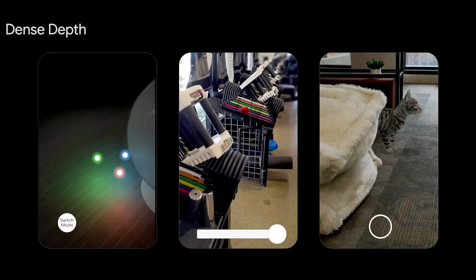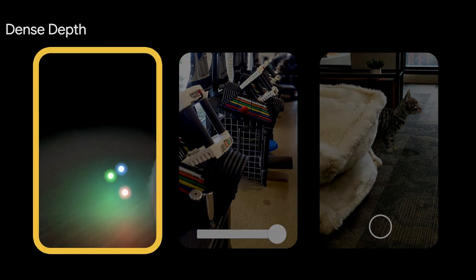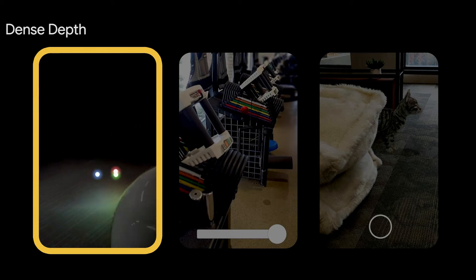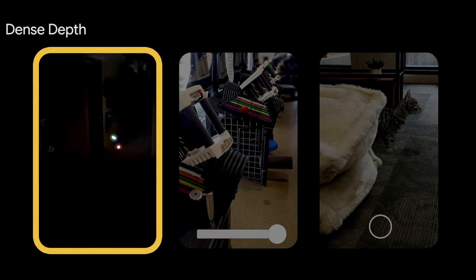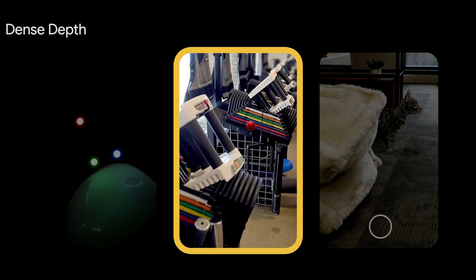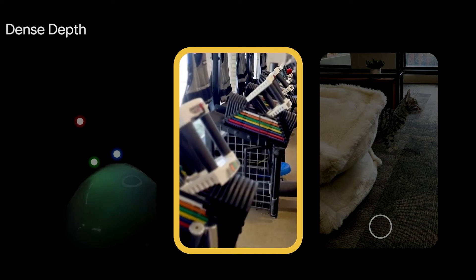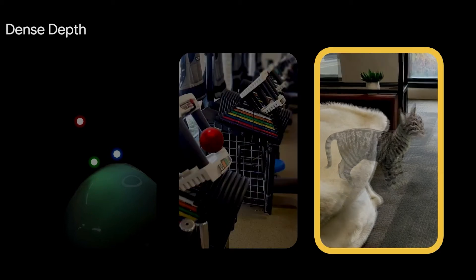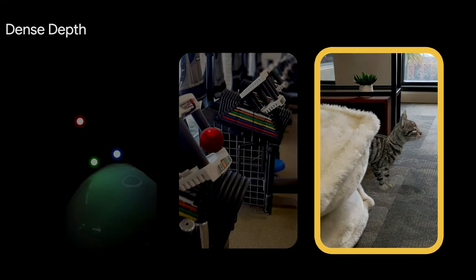Dense Depth ships a depth texture to the GPU and renders screen space effects with fragment shaders. It is useful for many computational photography tasks, such as relighting the world with virtual light sources, simulating a DSLR camera with aperture effects like depth of field, and occluding virtual objects with the physical environment.